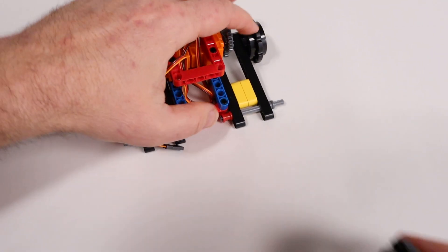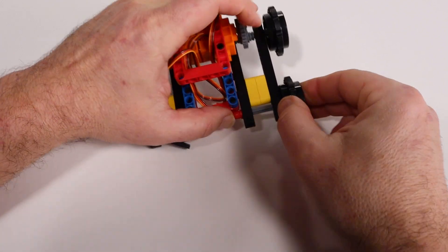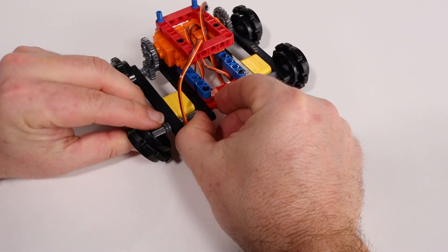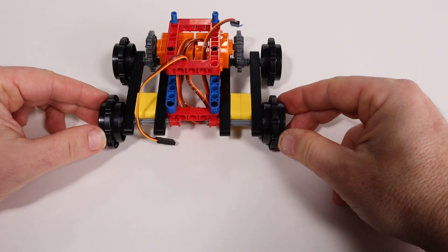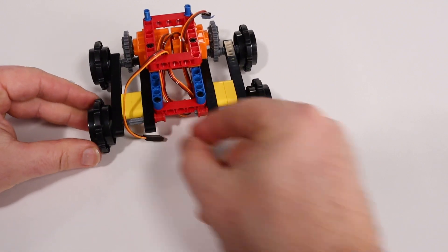Now we'll add the rear sprockets. These go on just like the front ones. Line up the cross section and press the sprocket into place while holding the back of the axle still. Make sure to press the sprocket all the way up against the half bushing.